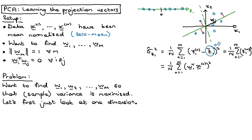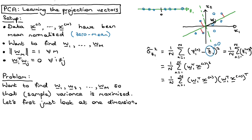We can unpack that further using a quick trick: the square of something involving vectors can be written as that expression times the transpose of itself. So we write 1 over N, sum over n, of W1 transpose XN times W1 transpose XN transpose. Since W1 transpose XN is just a scalar, taking its transpose doesn't change it, and we can use that to rearrange — flipping the transposed part gives XN transpose times W1.